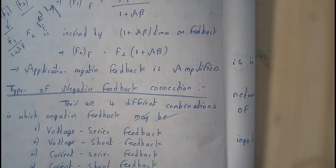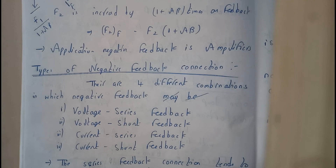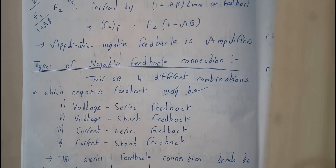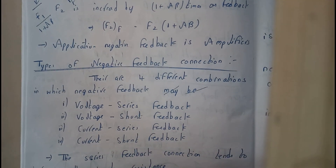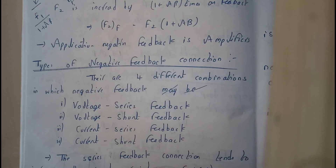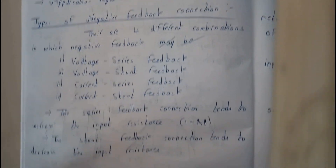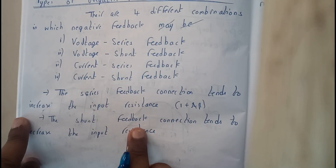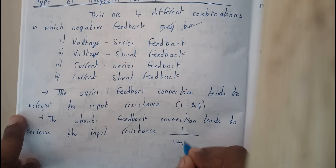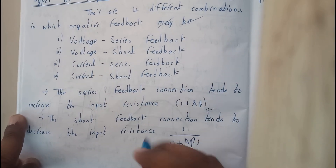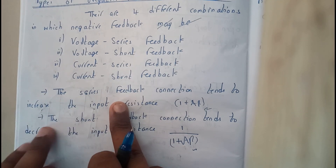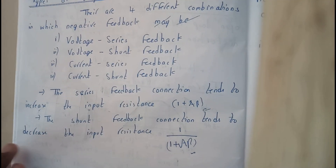The series feedback connection tends to increase the input resistance — it multiplies by 1 plus A beta. In shunt, the feedback connection tends to decrease, so it is divided by 1 plus A beta. In series it is going to increase; in shunt it is going to decrease. Shunt is nothing but parallel.